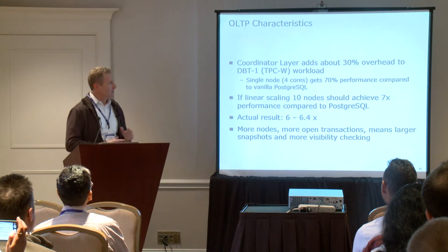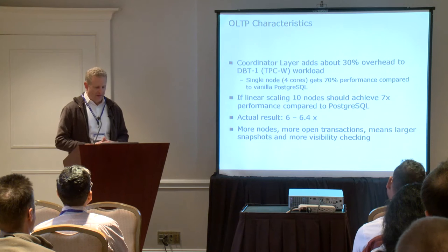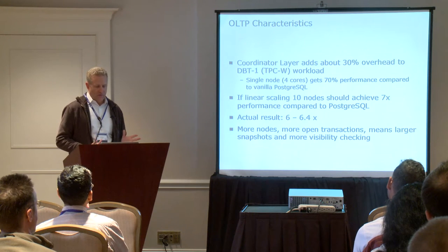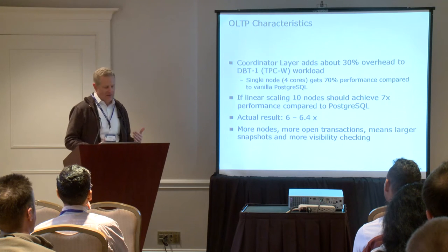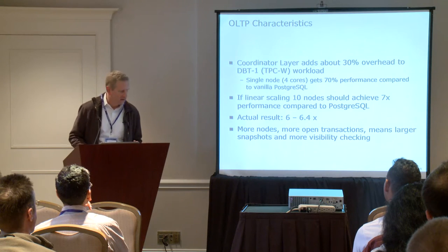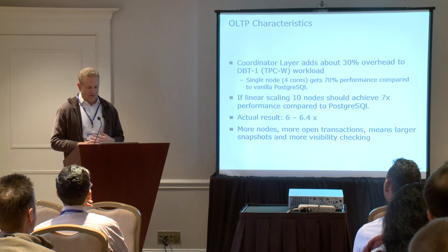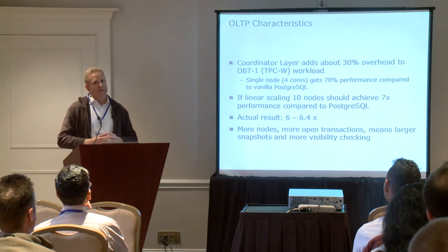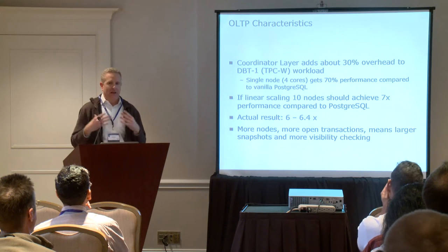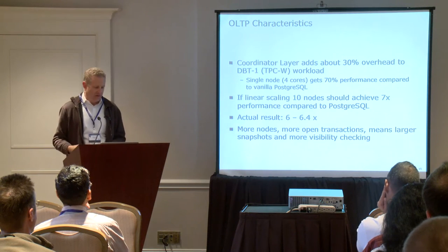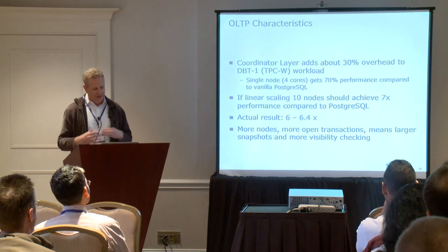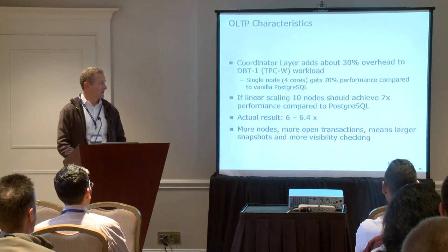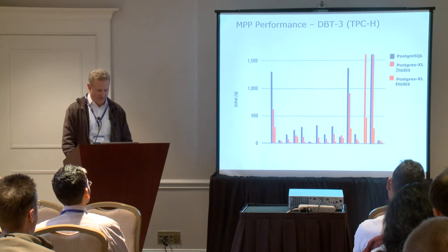The coordinator adds about 30% extra overhead. So ideally, if we had 10 nodes, taking into account that overhead, we would like to see about 7 times the performance, but in reality we see about 6 to 6.4 times performance. It's not going to be quite linear as we have more and more connections. We have more open transactions, larger snapshots, and there's more visibility checking that the cluster has to do.